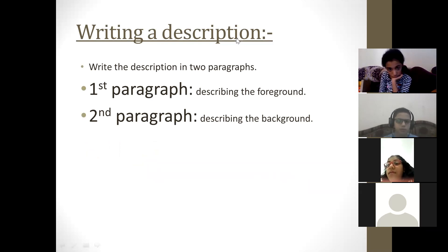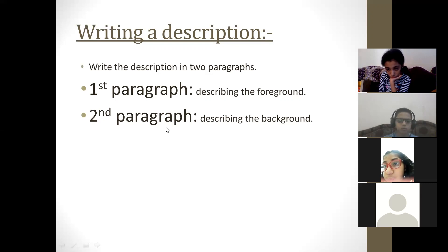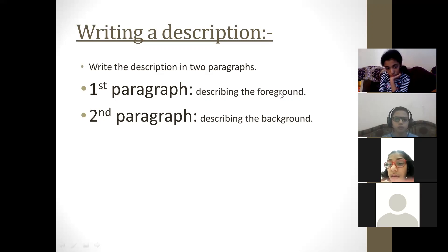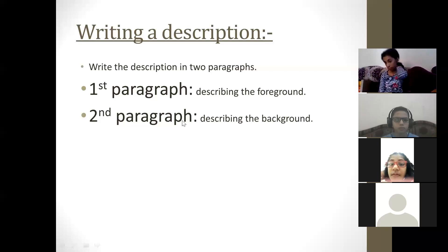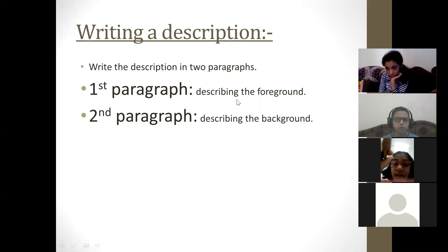Now, regarding writing the description: first of all, you have to divide your description of the picture into two paragraphs — first paragraph and second paragraph, only two paragraphs. In the first paragraph you would describe the foreground of the picture — things or people which are quite near to your view. In the second paragraph you would describe all those things or people which you observed in the background.